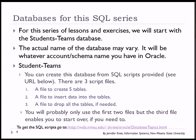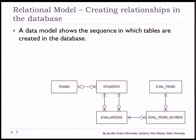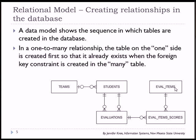The relational model for this particular database is shown here. We have teams; students are assigned to those teams; students are going to do evaluations on their teammates, so we have a relationship between student and evaluations. The evaluation will contain several evaluation items with a score for each item — those items would be things like professionalism, punctuality, contribution to work, and those types of things. What we see in this data model is that we have several one-to-many relationships.